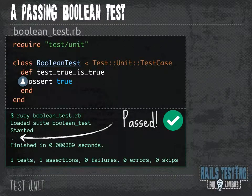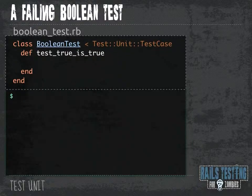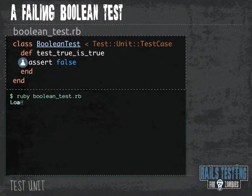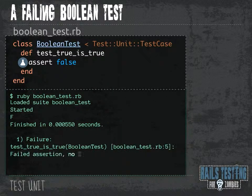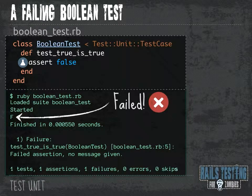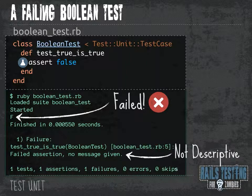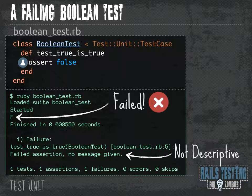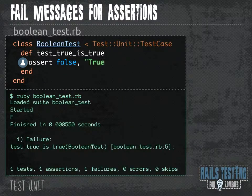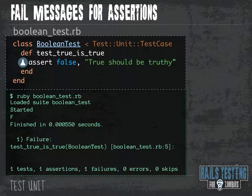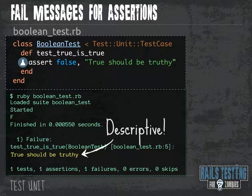If we have a bunch of tests, we're going to see a lot of dots. If we change the parameter in our assert method to false and run it from the command line, you're going to see that our test fails — we get that F. The failure message isn't really that helpful; it's not very descriptive. So sometimes we need a way to specify a more descriptive error message. We can do that by simply sending in a second parameter to the assert method — in this case, we're saying 'true should be truthy'. Then if we run the test again and it fails, it's going to give us that nice descriptive error message.